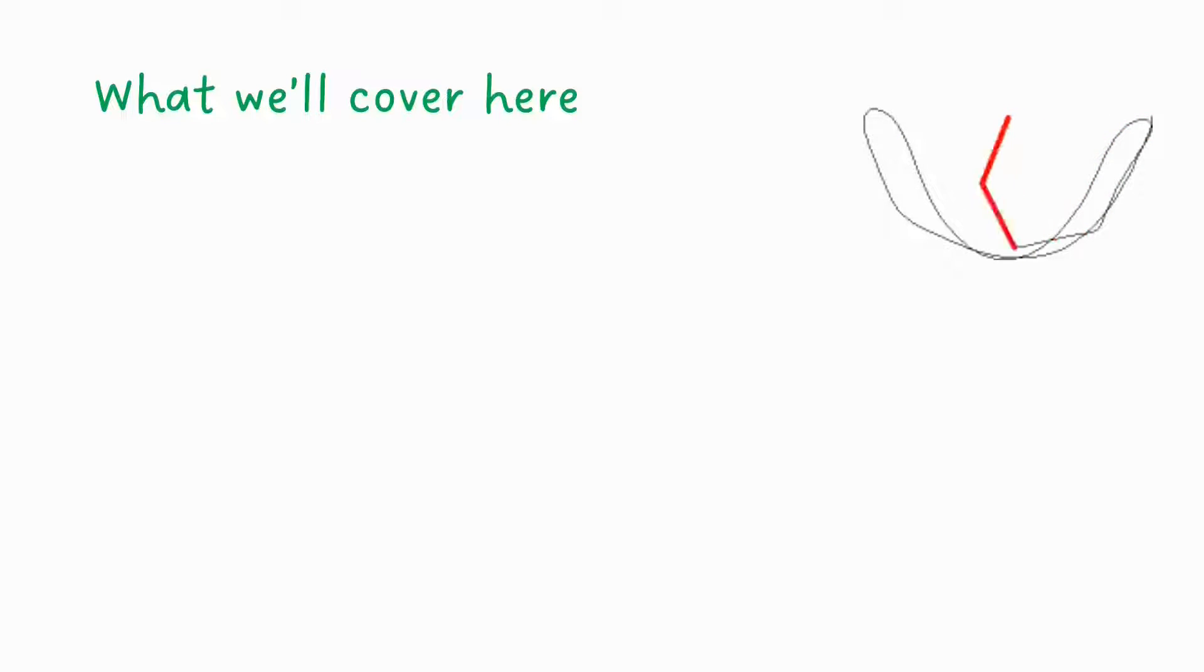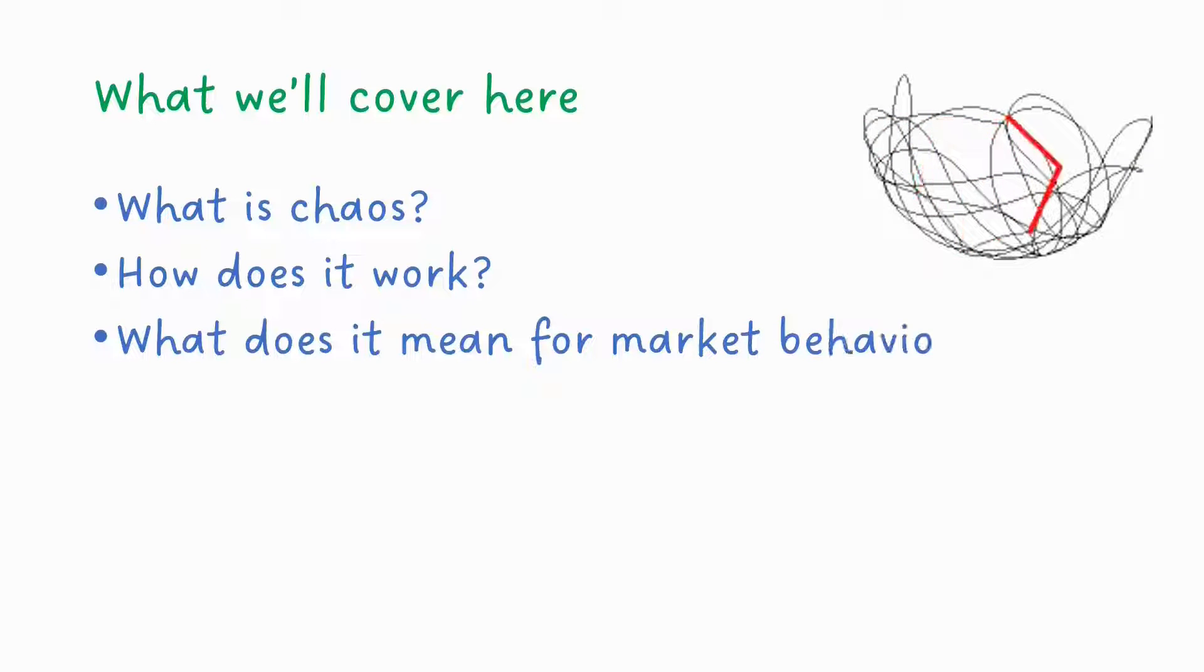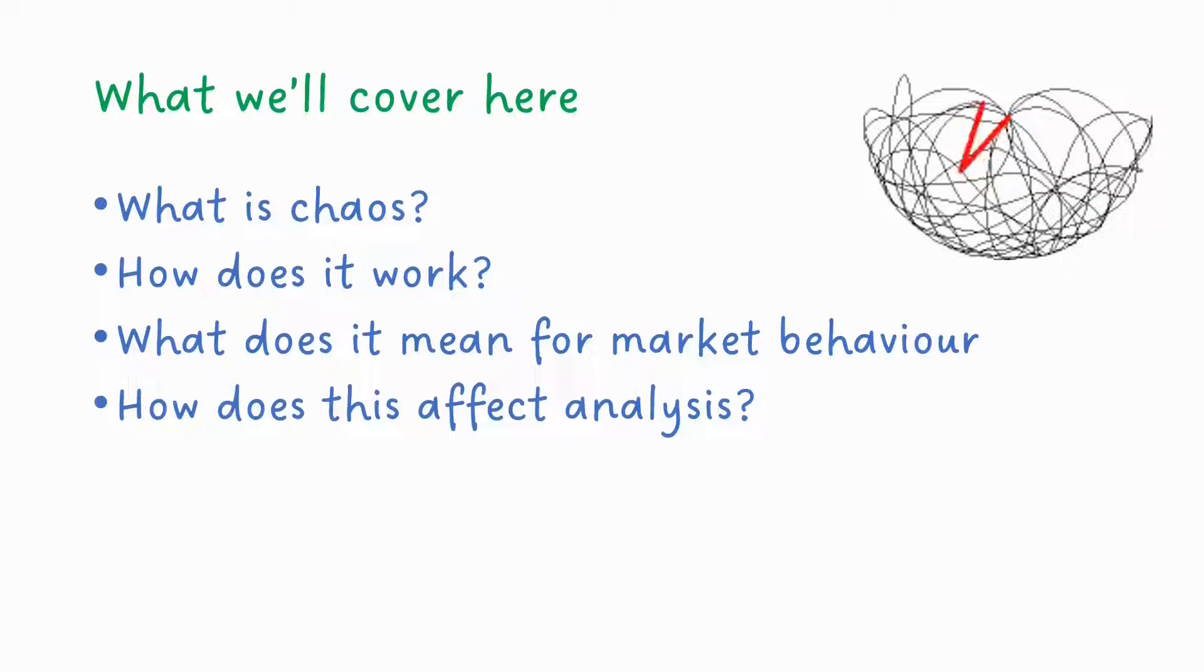So let's take a look and see what we'll cover here. First of all, we're going to look at what chaos is. We're going to examine how chaos works. We're going to think about what it means for market behavior. And we're also going to think about how this affects any sort of analysis that you might do on the market.